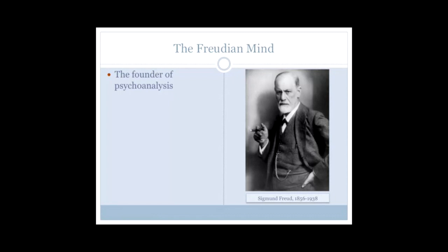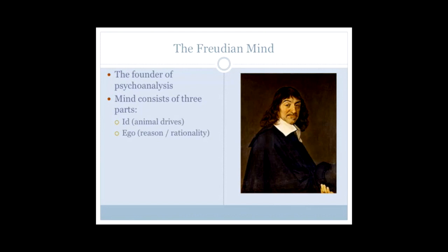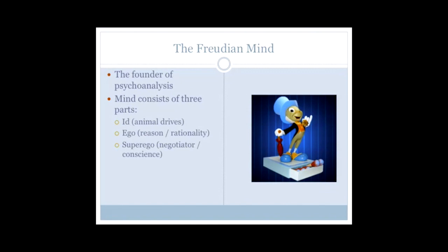And he believed that the mind consisted of three separate parts, all of which had evolved. There was the id, the animal drives, that connection with animals that Darwin suggested so strongly. There was the ego that represented our reasoning, our rational elements, the most evolved part of the mind. And there was the super ego that negotiated between the animal drives and the reason rationality, was in effect the conscience. And it's a model that was underpinned by Darwinian evolution.